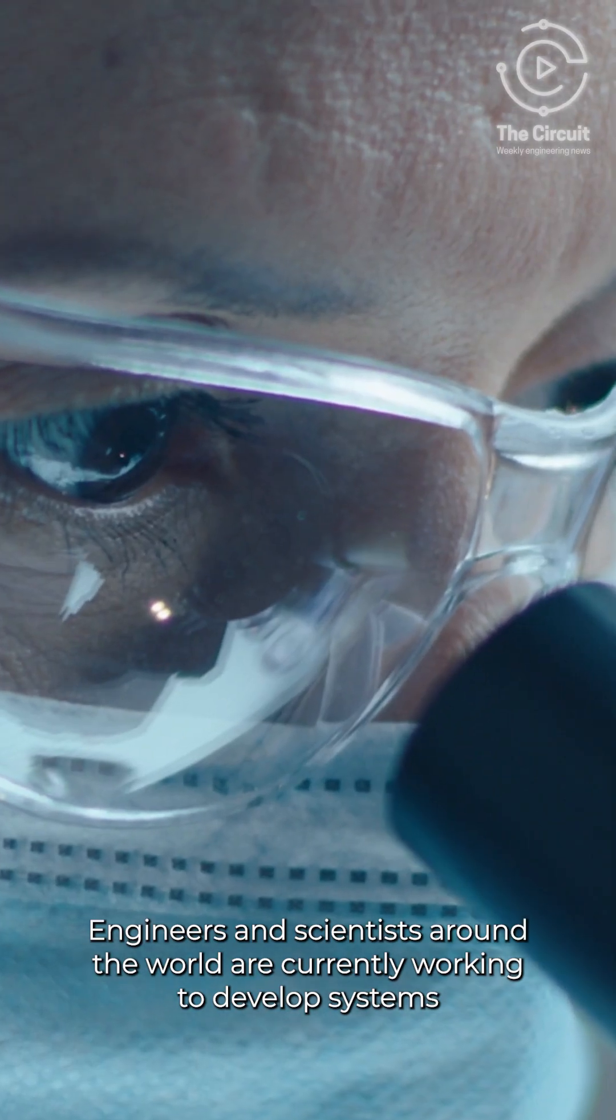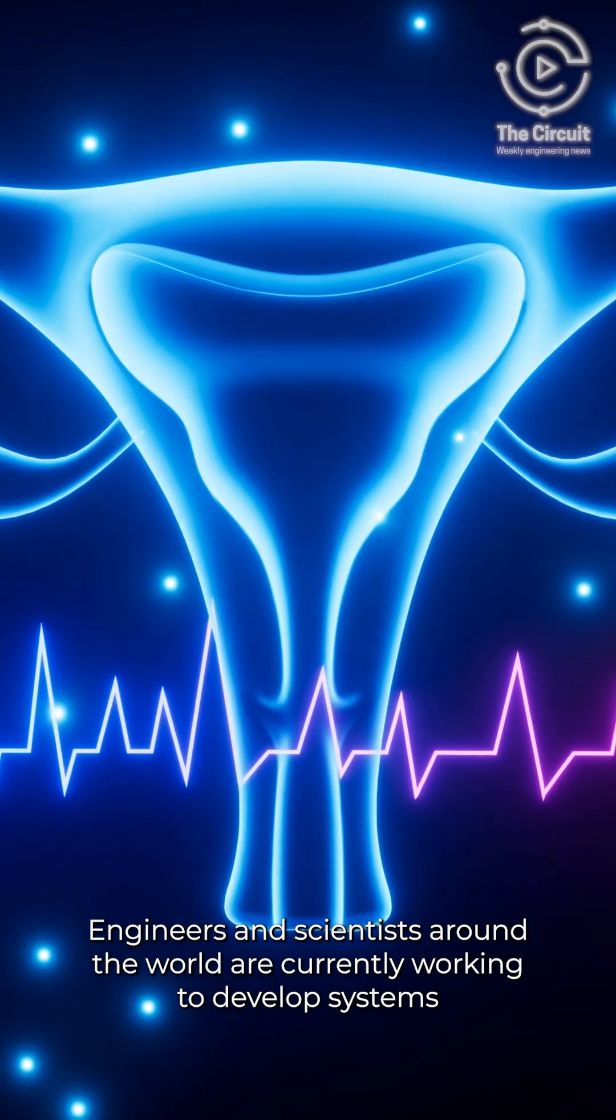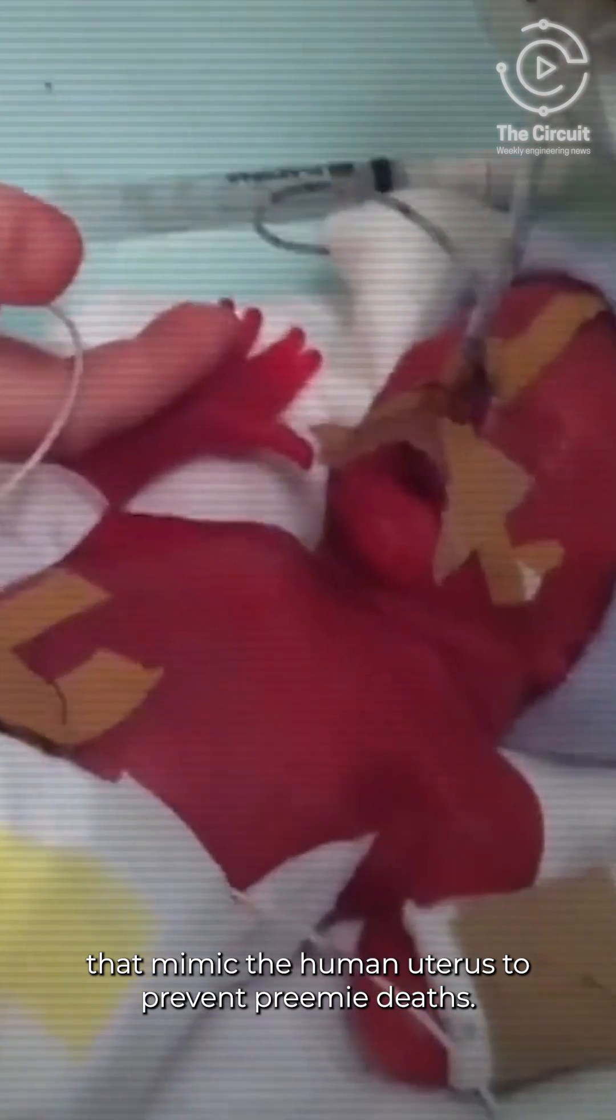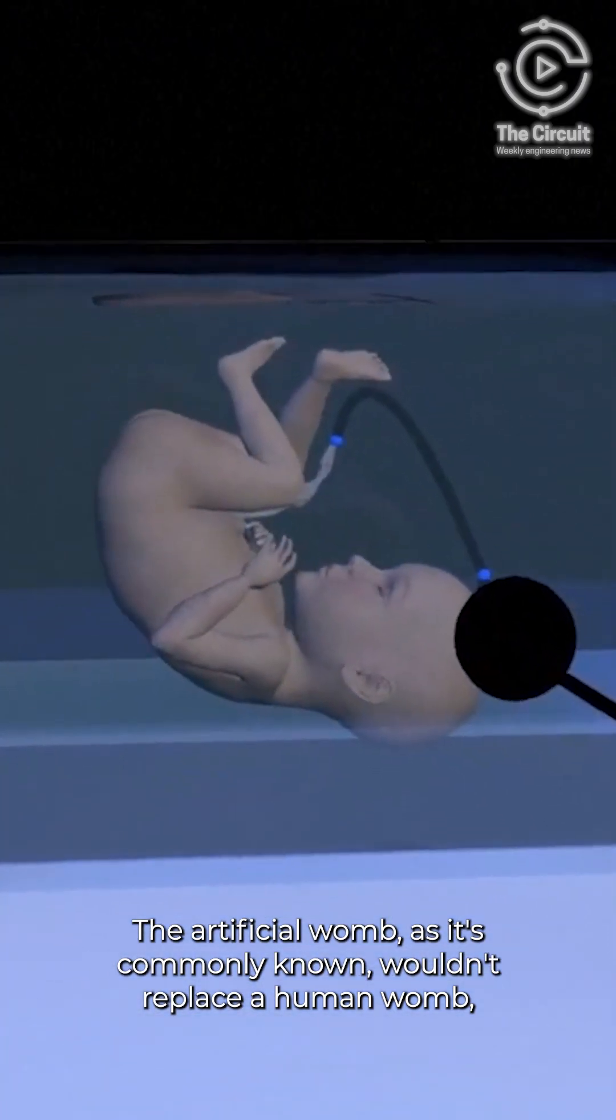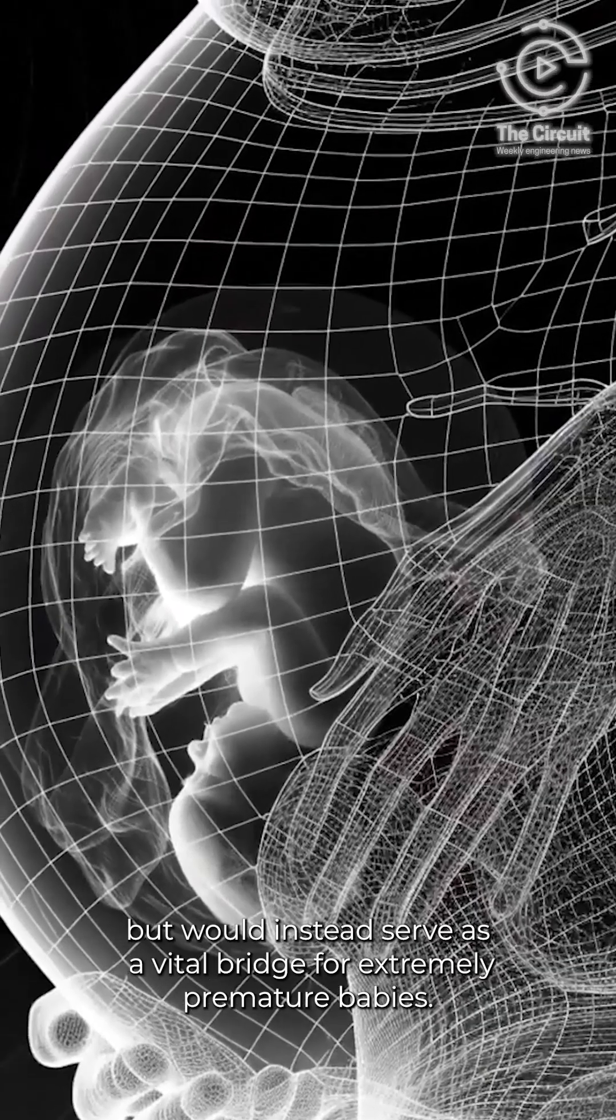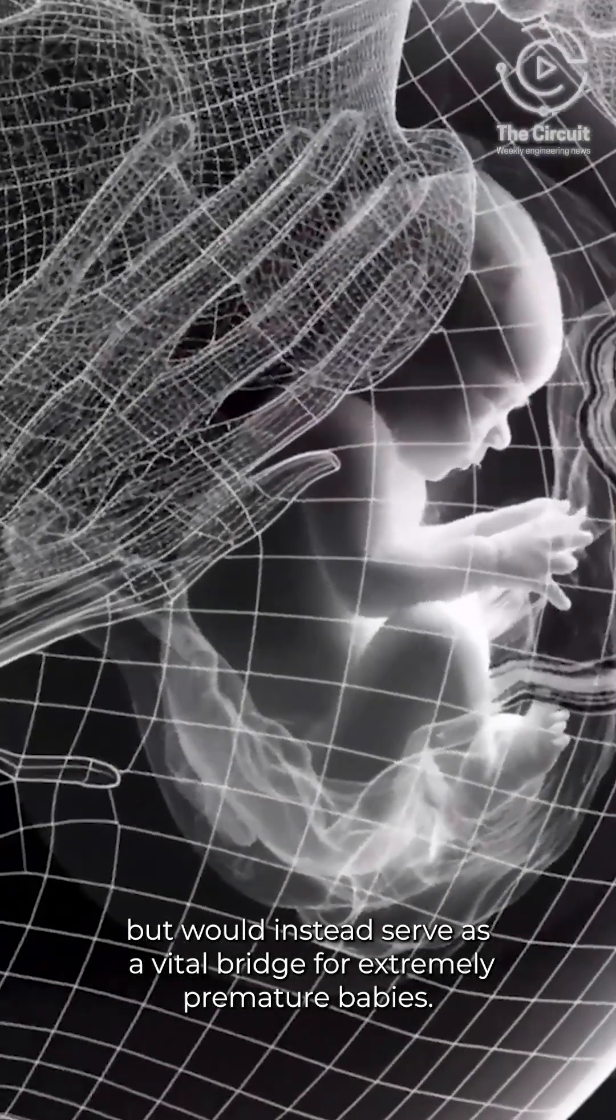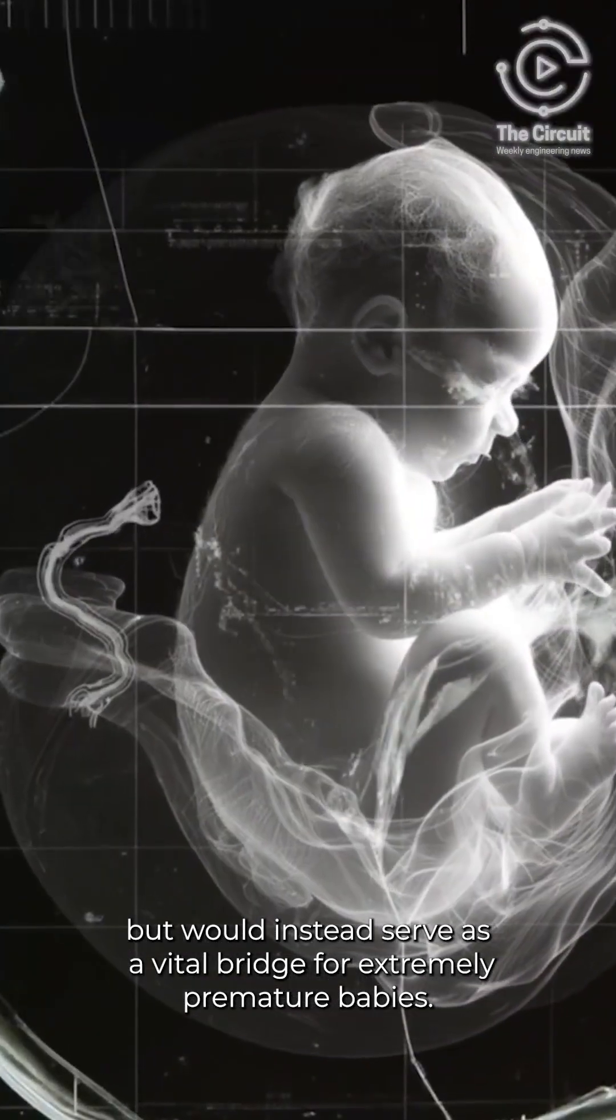Engineers and scientists around the world are currently working to develop systems that mimic the human uterus to prevent preemie deaths. The artificial womb, as it's commonly known, wouldn't replace a human womb but would instead serve as a vital bridge for extremely premature babies.